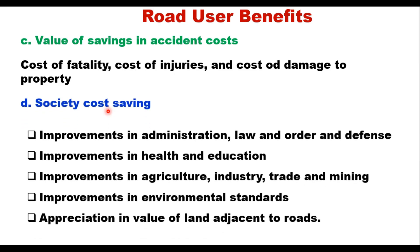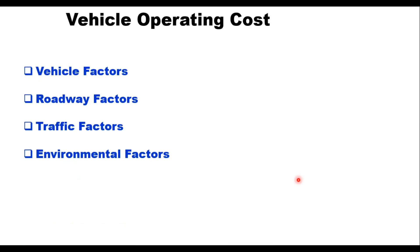Societal costs include improvements in administration, law and order and defense; improvements in health and education; improvements in agriculture, industry, trade and mining; improvements in environmental standards; and appreciation in value of land adjacent to roads. These are the most difficult to quantify and are generally ignored. In fact, only direct road user benefits can be quantified in monetary terms, and IRC SP 30 2019 also presents methods to quantify only direct road user benefits — the most direct being vehicle operating cost.